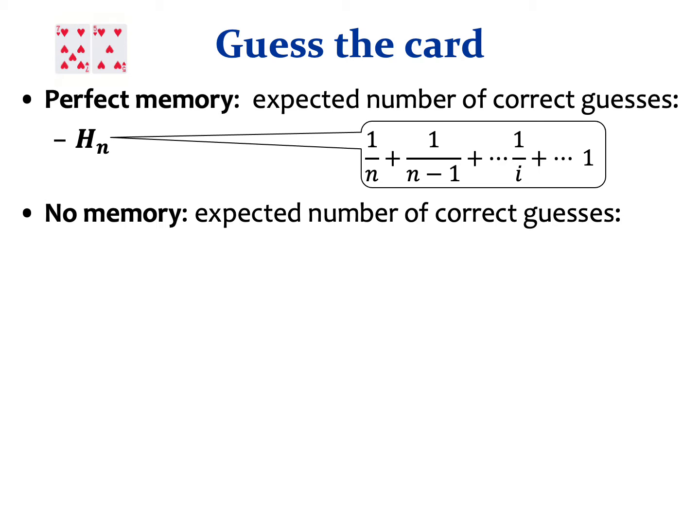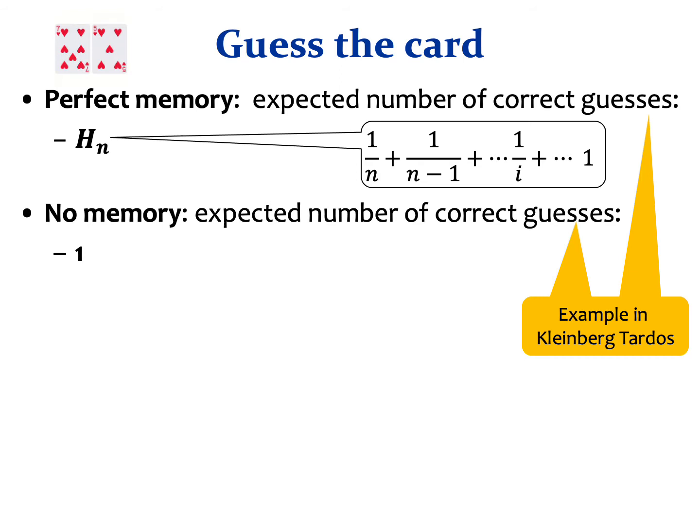On the other hand, a memoryless guesser cannot do anything better than guess with probability 1 over N. By linearity of expectation, that results in a single correct guess throughout the game. However, a memoryless guesser can get a single correct guess for certain by simply repeating the same guess over and over again. Since each card must be drawn at some point, the guesser can achieve this single correct guess with probability 1.